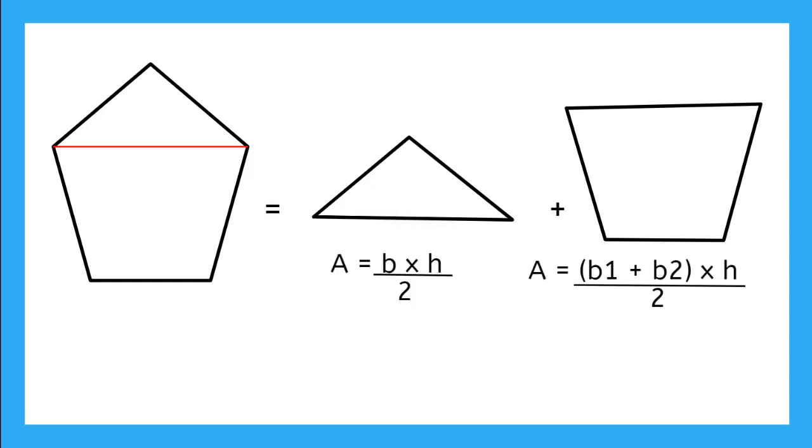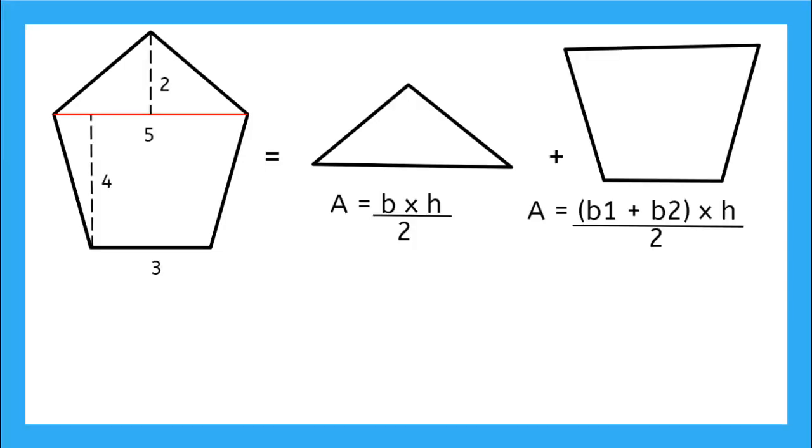And we know the formula for triangles is base times height divided by 2. And the area for trapezoids is base 1 plus base 2 times the height over 2. So now I have my values for my pentagon, and I can see how those values would fit into the formulas for my triangle and my trapezoid.